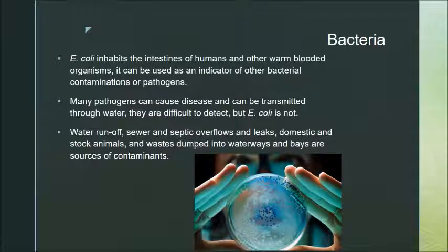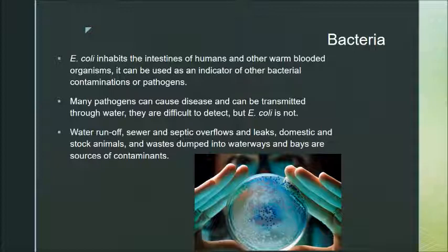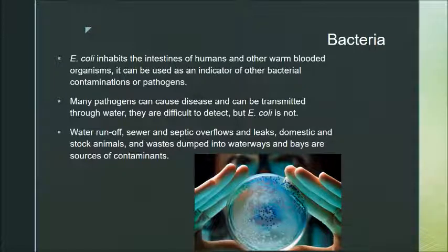The first biological indicator we're going to talk about is bacteria. E. coli is one of the most used bacterial indicators. It comes from the intestines of humans and other warm-blooded mammals and other organisms, and can be used as an indicator of what other types of bacterial contamination or pathogens would be present. If there's E. coli, we assume there are lots of other things as well. Many pathogens cause disease but are difficult to detect, whereas E. coli is easy — we have lots of tests and know exactly how to isolate it.